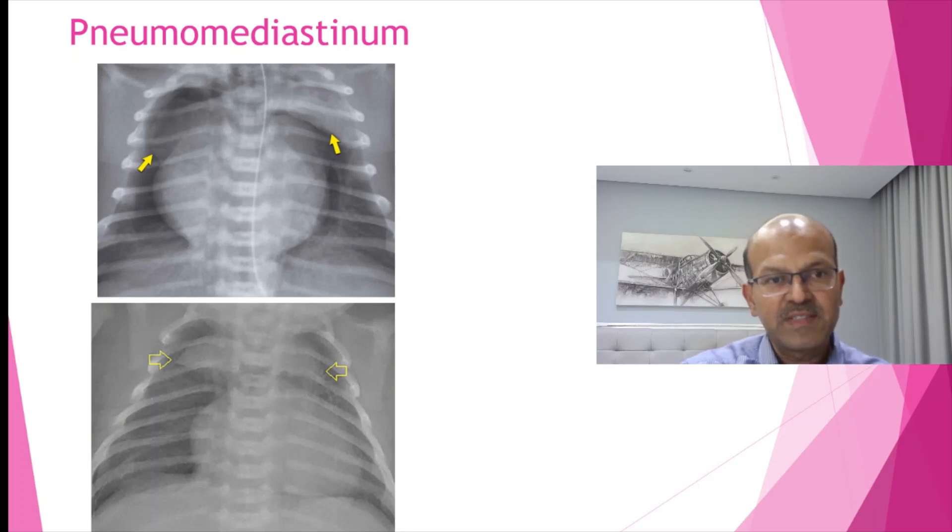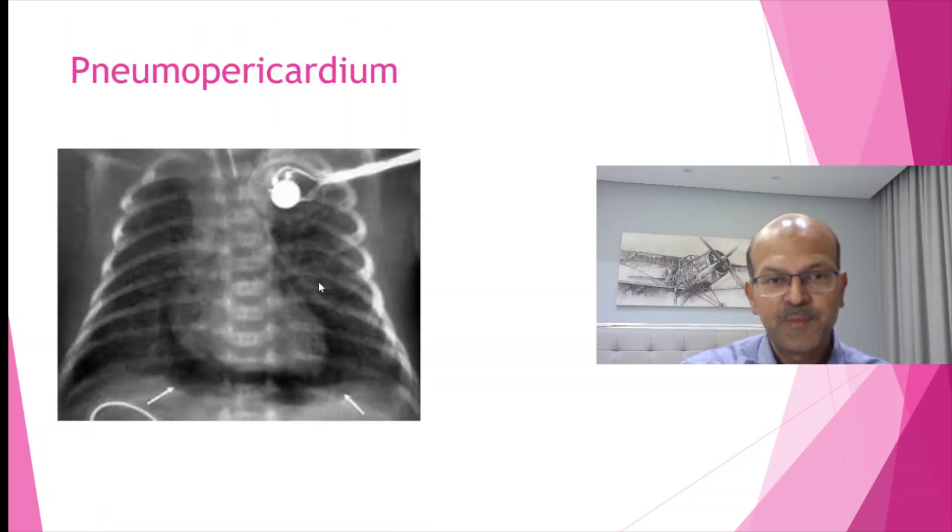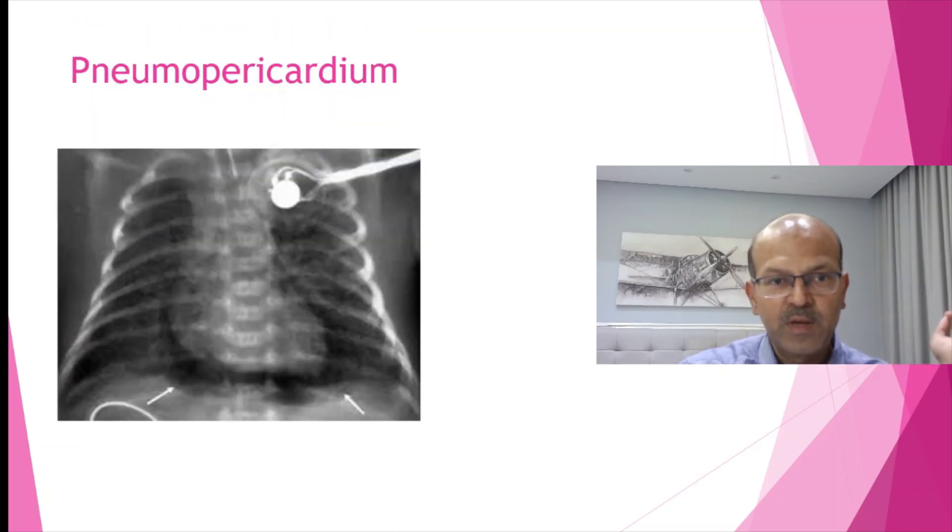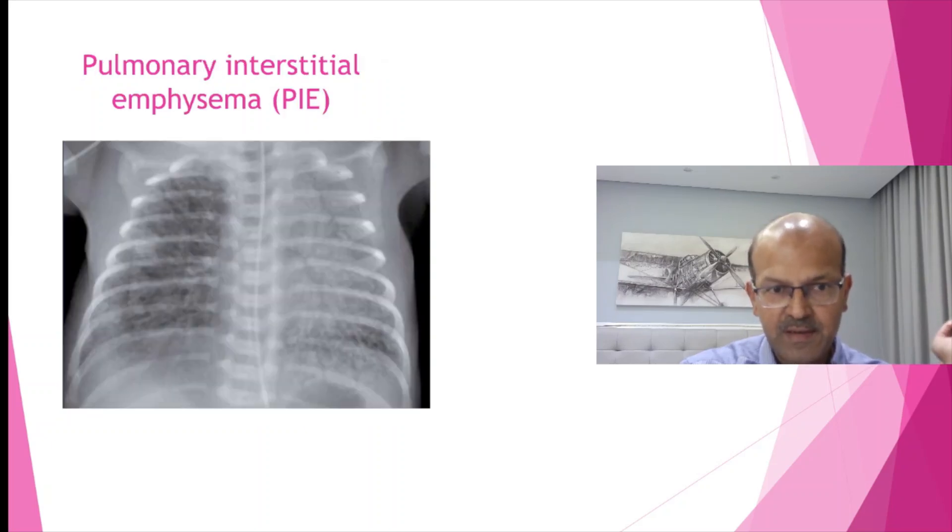Pneumomediastinum—you have air in the mediastinal area and may have the sail sign as you can see here. The thymus is lifted up but there is no air under the heart shadow. In this case, there is a pneumopericardium where there is air under the heart shadow. Pneumomediastinum doesn't need any treatment except monitoring. A pneumopericardium might need needle drainage if the baby is hypotensive. Better to call someone experienced to do the drainage.